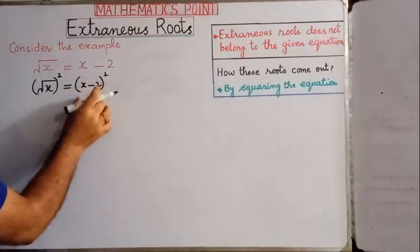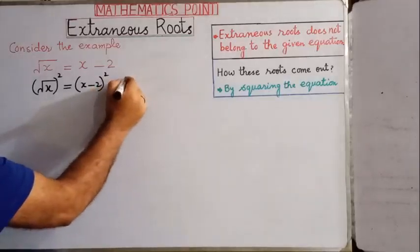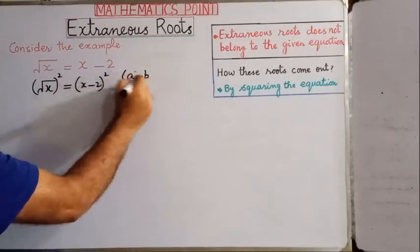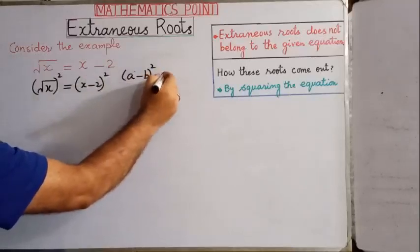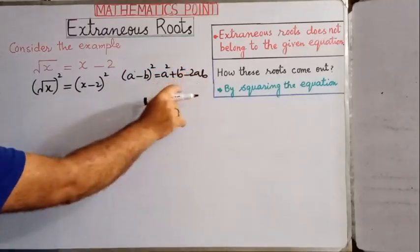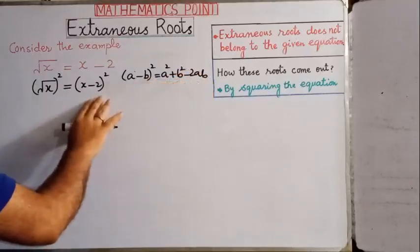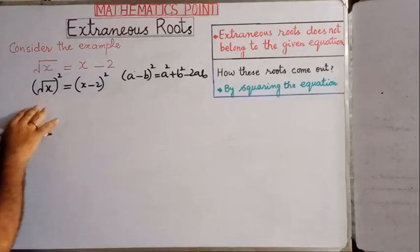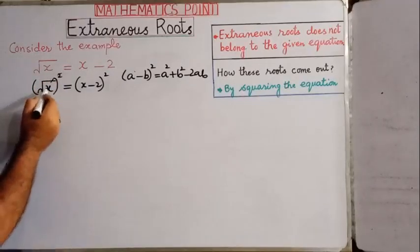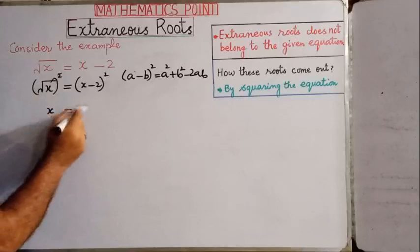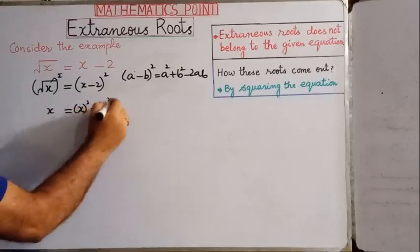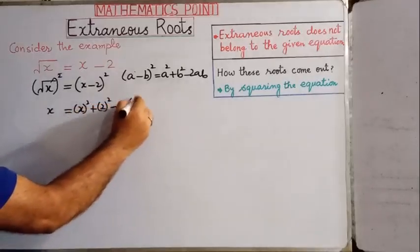Here we have to apply the formula. The formula is: (a minus b) whole square is equal to a square plus b square minus 2ab. We are going to apply this formula on the right hand side of this equation. On the left hand side, the square cancels with the square root, so we have x on the left hand side, equal to x square plus 2 square minus 2 times x times 2.